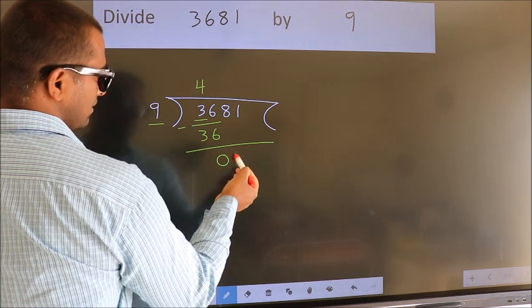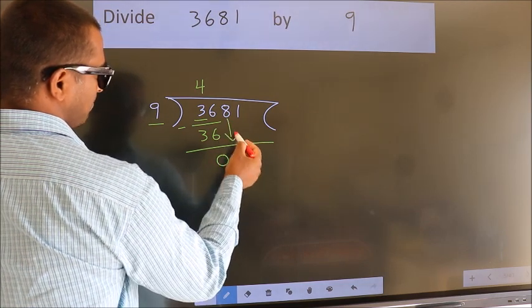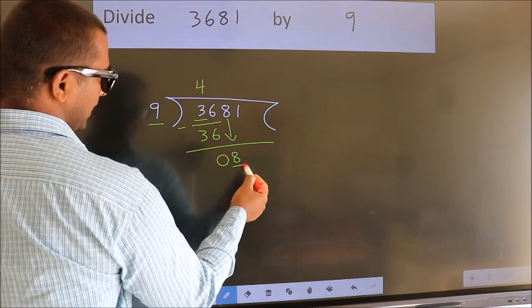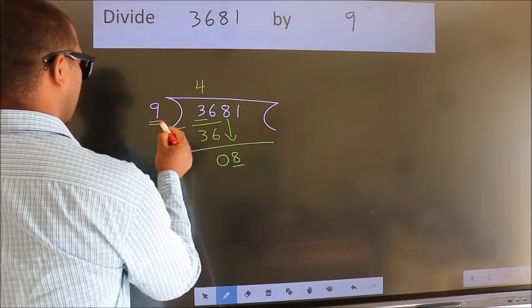After this, bring down the beside number. So, 8 down. Here we have 8. Here 9.